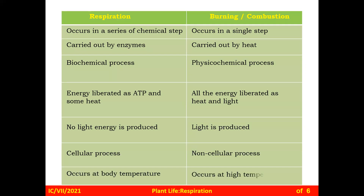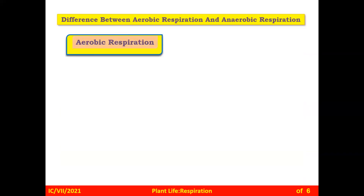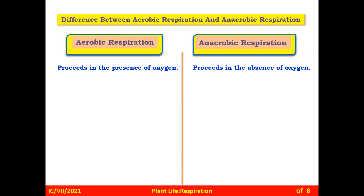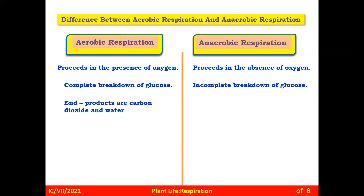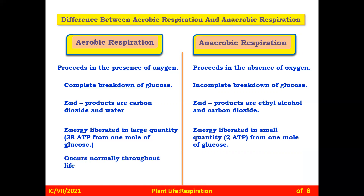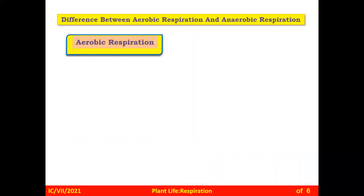The difference between aerobic and anaerobic respiration: aerobic respiration proceeds in the presence of oxygen; anaerobic respiration proceeds in the absence of oxygen. Complete breakdown of glucose takes place in aerobic respiration, whereas incomplete breakdown occurs in anaerobic respiration. End products of aerobic respiration are carbon dioxide and water; end products of anaerobic respiration are ethyl alcohol and carbon dioxide. Energy liberated in aerobic respiration is 38 ATP molecules, whereas anaerobic respiration releases only 2 ATP molecules. Aerobic respiration occurs normally throughout life; anaerobic respiration occurs temporarily for a short period.